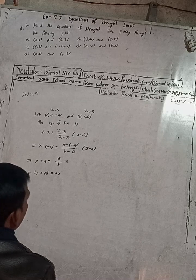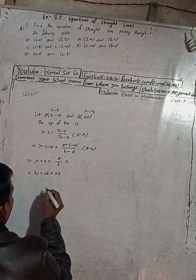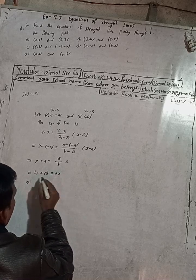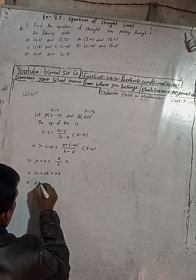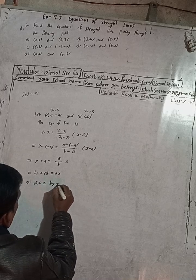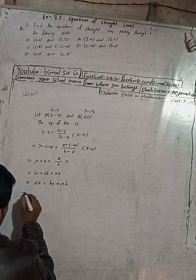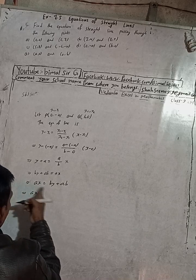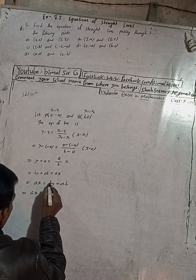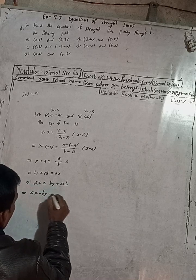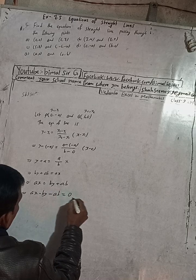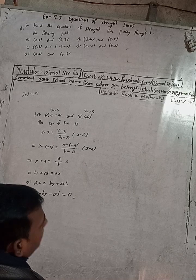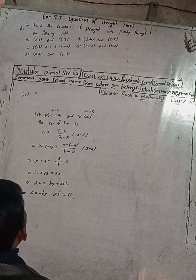Rearranging: ax equals by plus ab. Taking by to the other side: ax minus by minus ab equals 0. So the required equation for 5d is ax minus by minus ab equals 0.